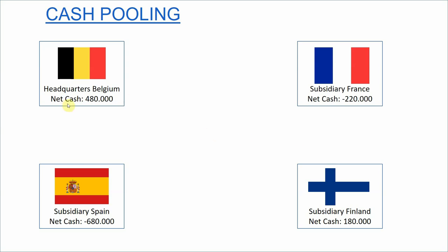The headquarters have a net cash of 480,000 euro. The French subsidiary has a 220,000 euro overdraft. The Finnish subsidiary has a net cash of 180,000 euro, and the Spanish subsidiary has an overdraft of 680,000 euro.